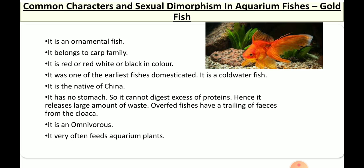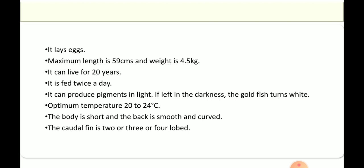These animals are omnivorous and often feed on aquarium plants as well. It lays eggs. The maximum length it can reach is up to 60 cm and a weight of about 4.5 to 5 kg, and it can live for 20 years. It is fed twice a day, and it can reproduce pigments in light, so if left in darkness the goldfish turns white — therefore it is better to keep the light on to maintain good coloration.